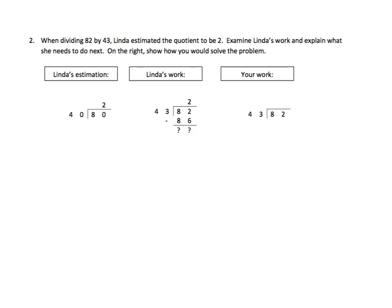Linda rounded 43 to 40, and most of us would do the same, and 82 to 80. And that's a valid strategy. But when she does the actual problem, she multiplies 43 times 2 and gets 86. And as we can see, 86 is greater than 82. So what does she have to do next?